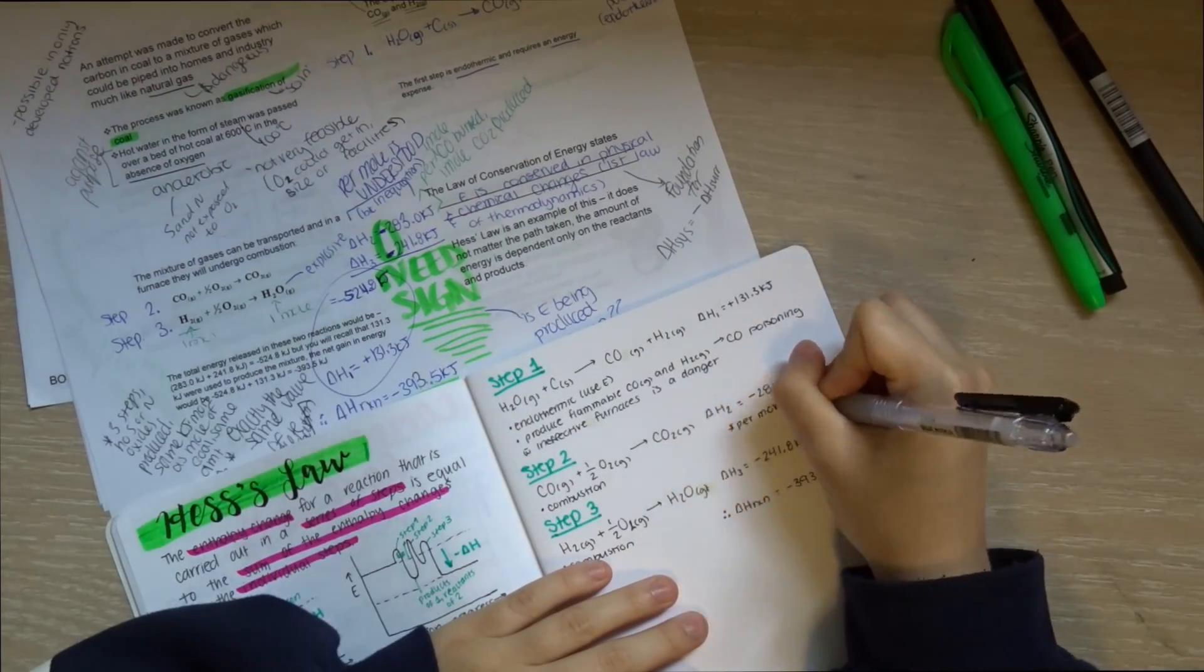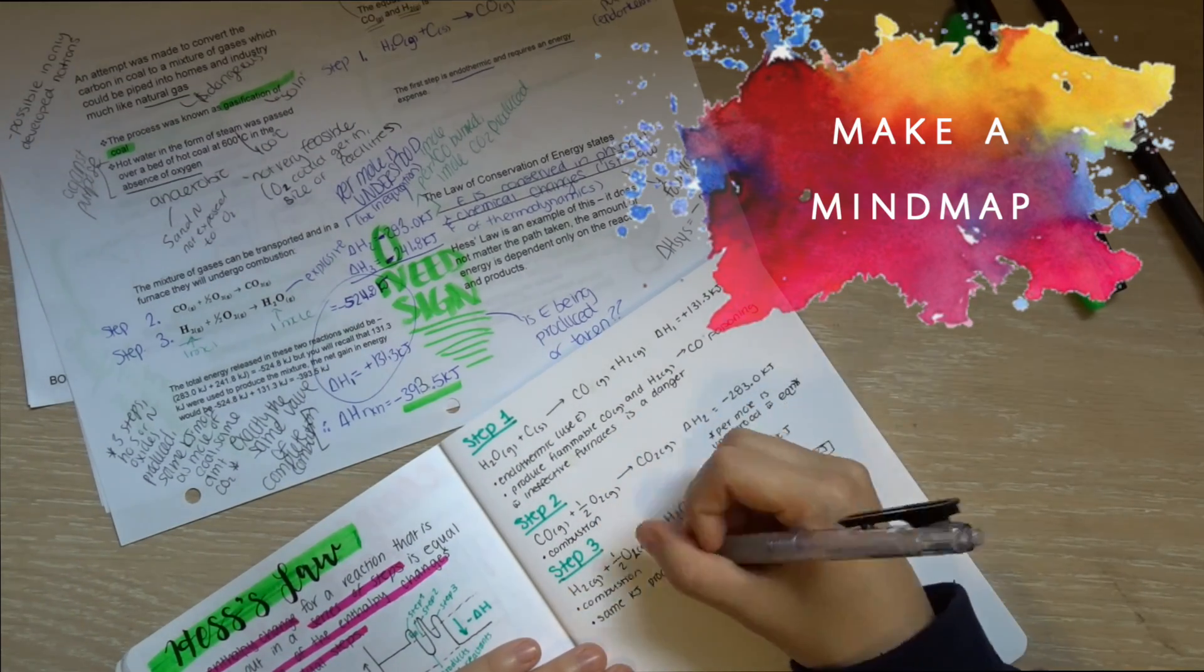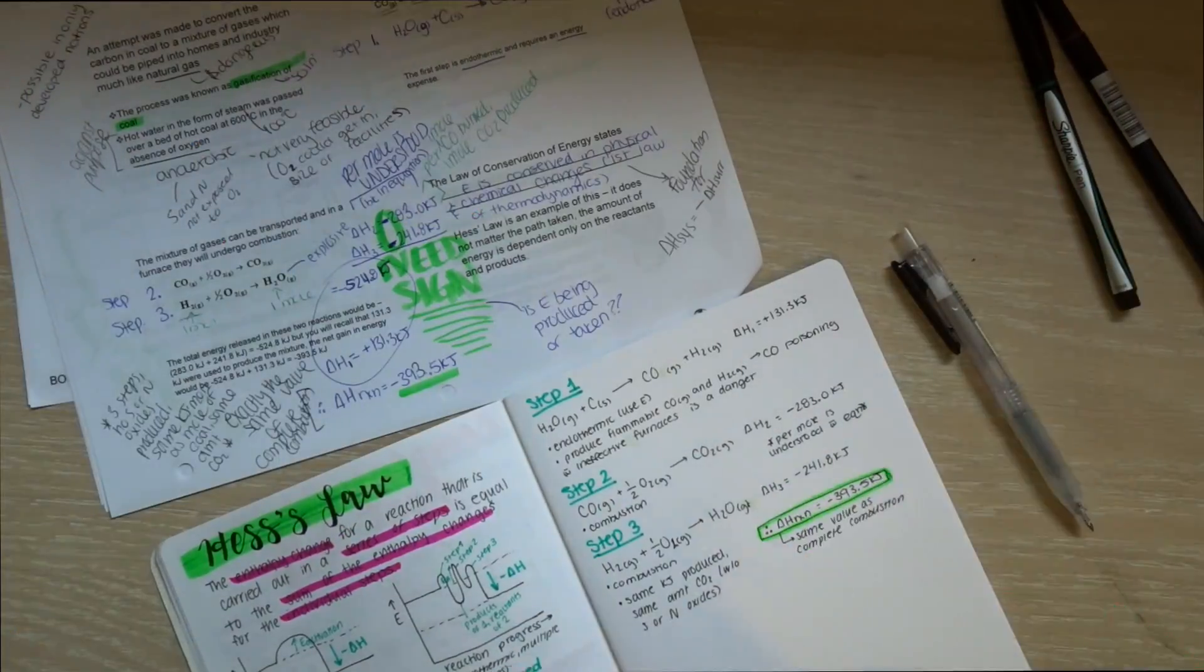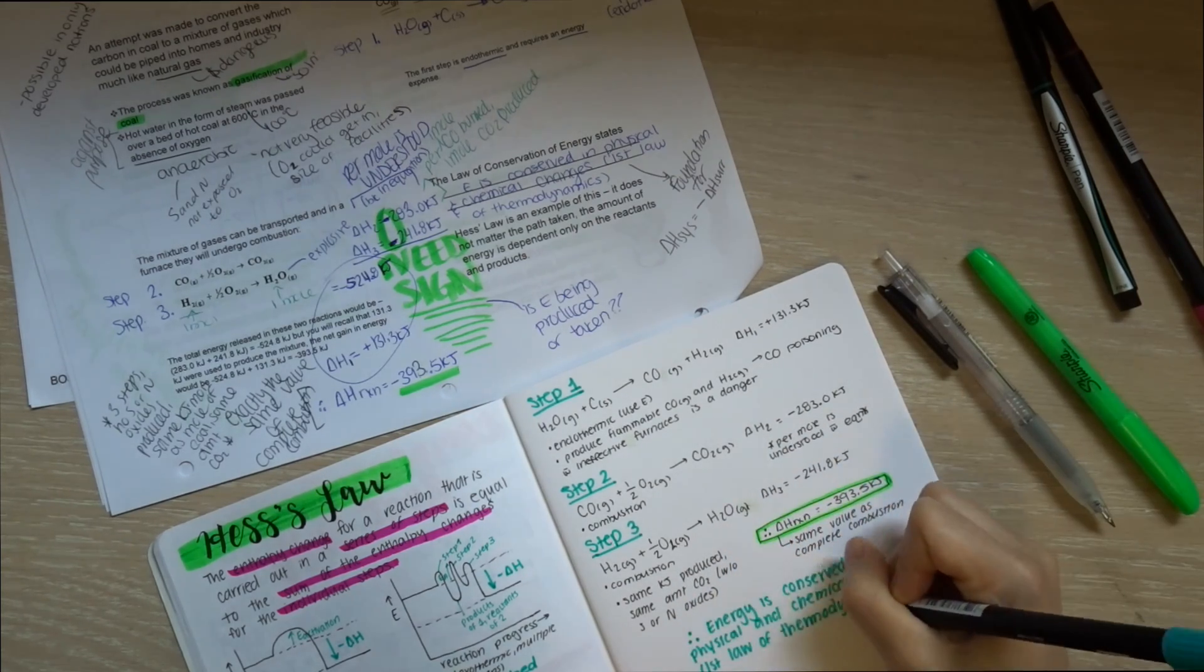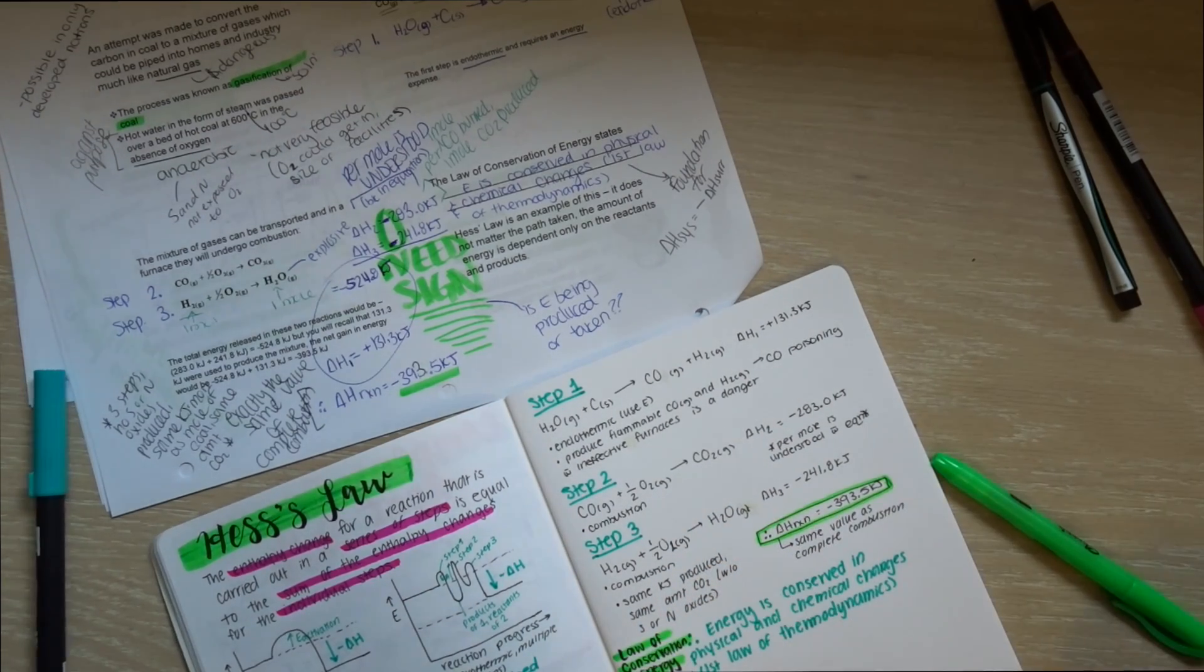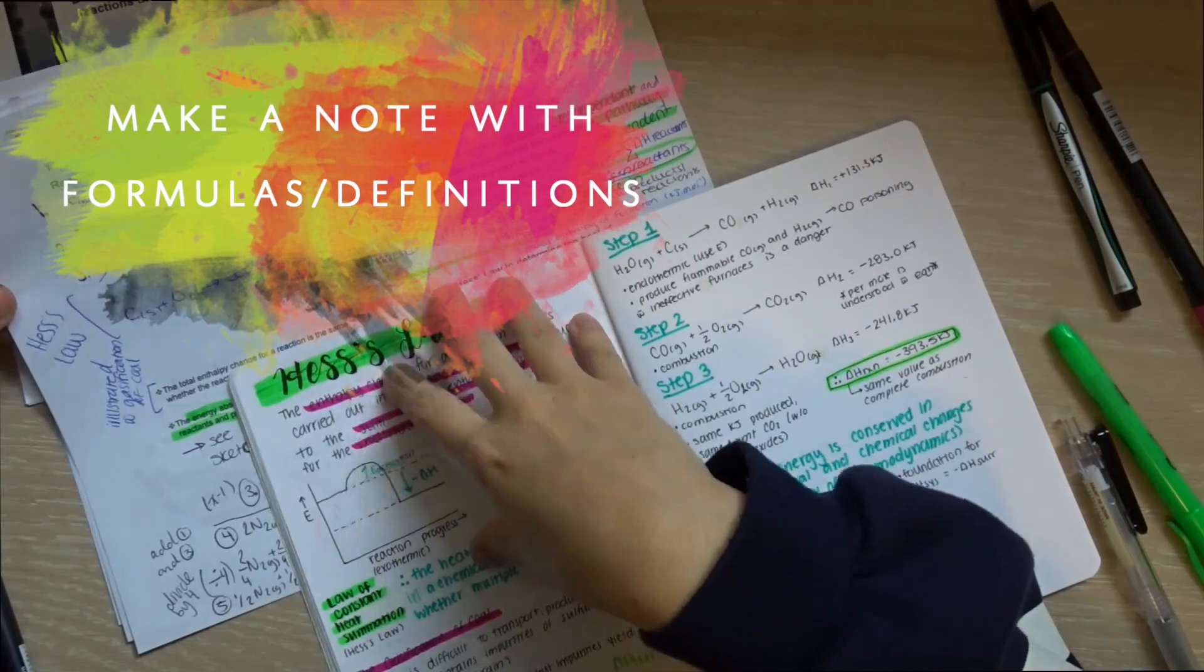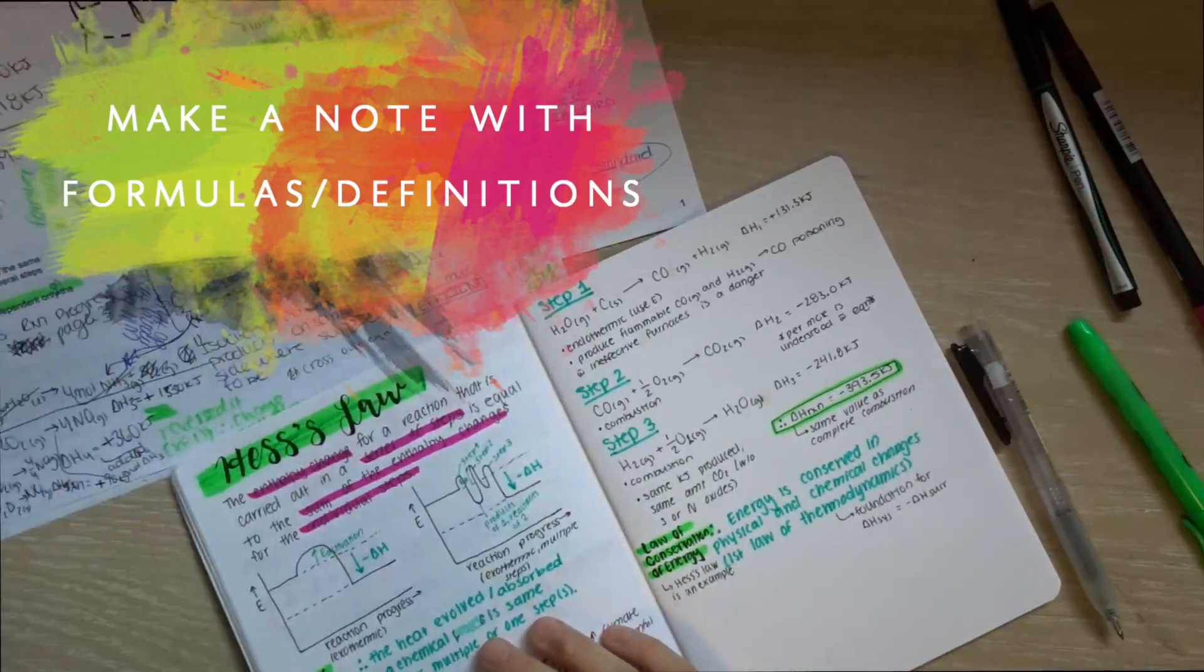Next, I like to make a really concise mind map or one-page note with all the formulas or definitions from the unit. In thermochemistry there's a lot of formulas, like the change in enthalpy, definitions about average bond enthalpy and heat. I wrote down one page with all the formulas and another page with all the definitions, so it was really easy to look over the things we learned without reading all my notes at once.